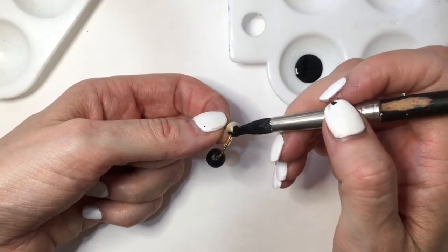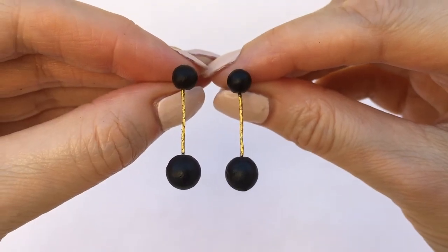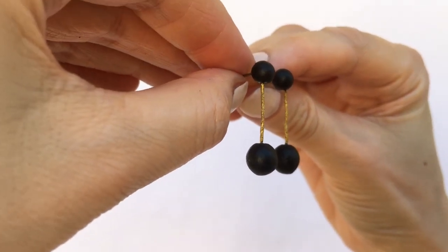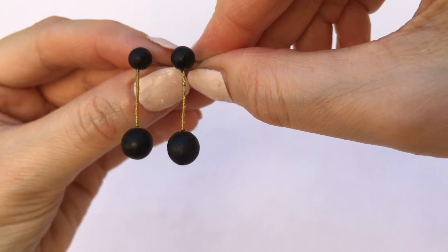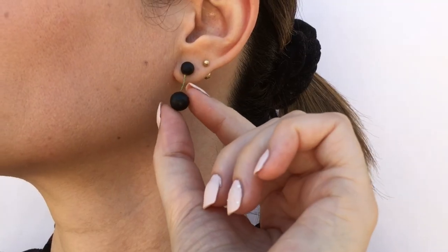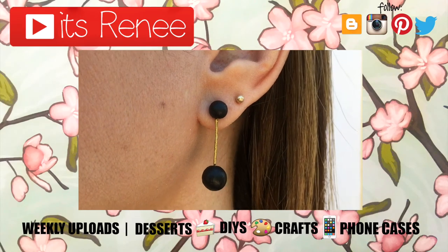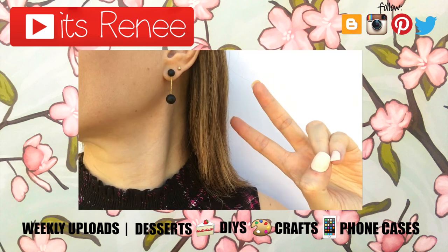But yeah, guys, these are the earrings that I want to share with you. Honestly, I love them. They're really cute. I think they look fancy, like a subtle statement. It's a good option for when you want to wear gold but you don't want to go all out with gold. These earrings look amazing with halter tops. They're pretty lightweight, pretty easy to make, affordable to make as well. I really hope you like them. If you did, don't forget to give this your thumbs up. Check out more accessories on my channel. Thank you so much for watching. I'll talk to you later and take care. Bye!